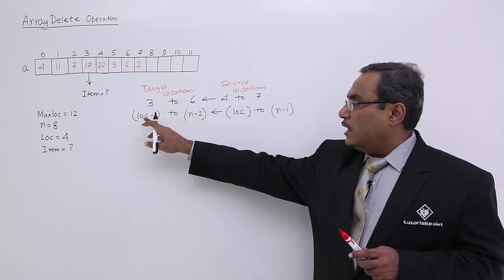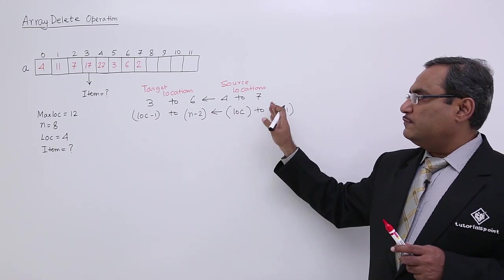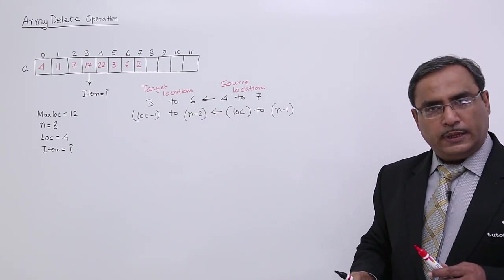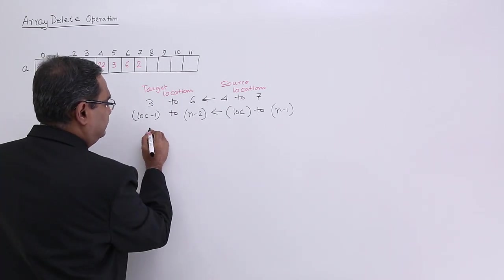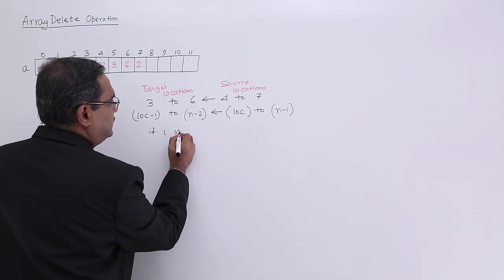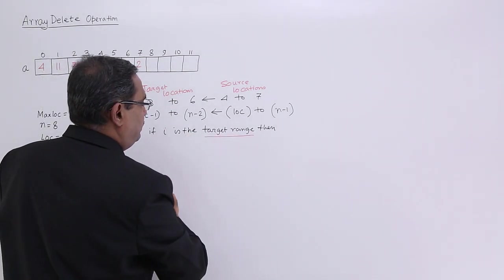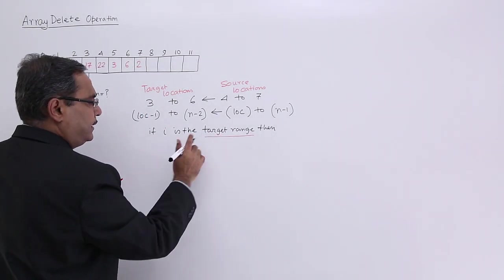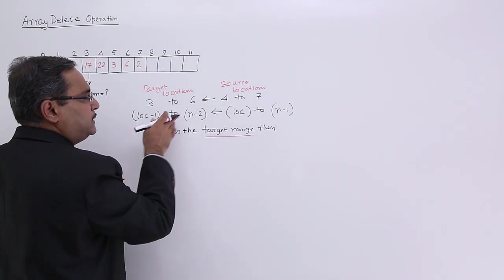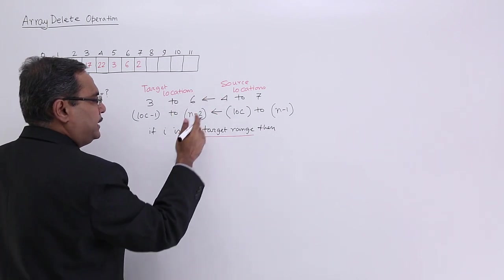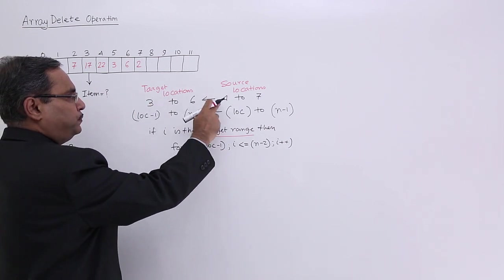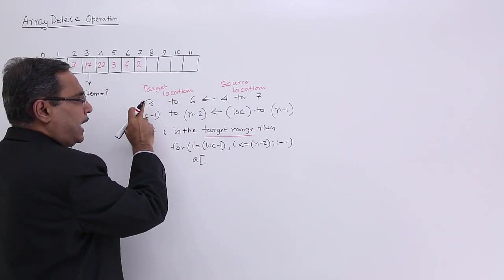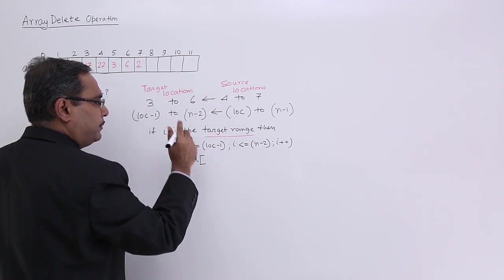So this is the target location and this is the source location from where data will be coming. Now see, if i is the target range, then 3, 2, 6 means I can go on incrementing. So target location, at the 3rd place, 4th place data will be coming. So at the ith place, i plus 1 data will be coming.